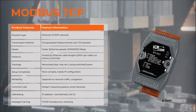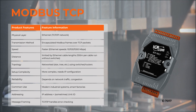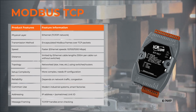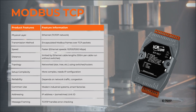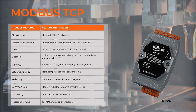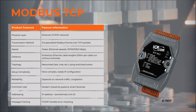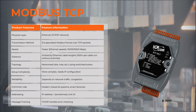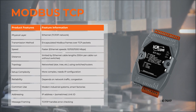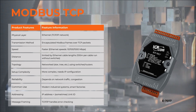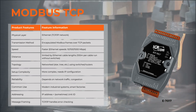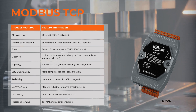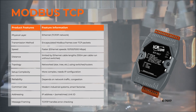Setup complexity is more complex, requiring IP configuration. Modbus TCP reliability depends on network traffic and congestion, and its common use is modern industrial systems and smart factories. TCP addressing uses an IP address, sometimes with a unit ID, and TCP/IP handles error checking.